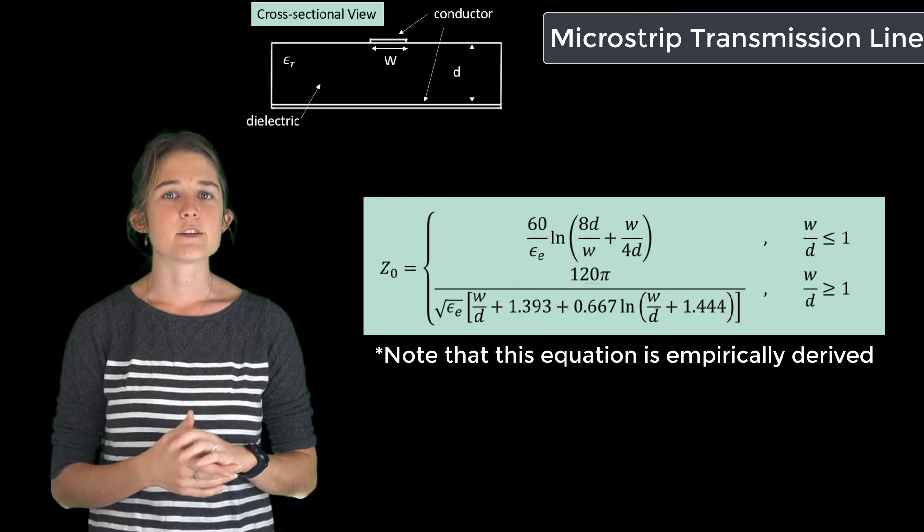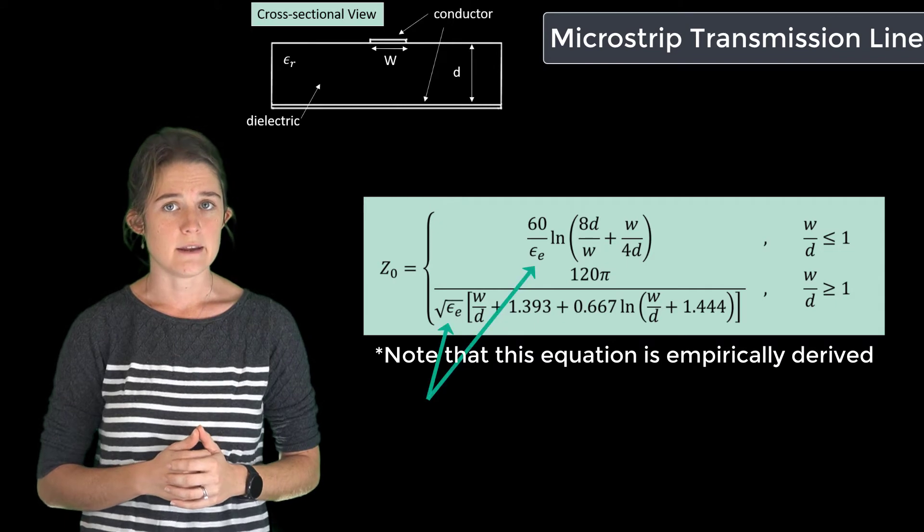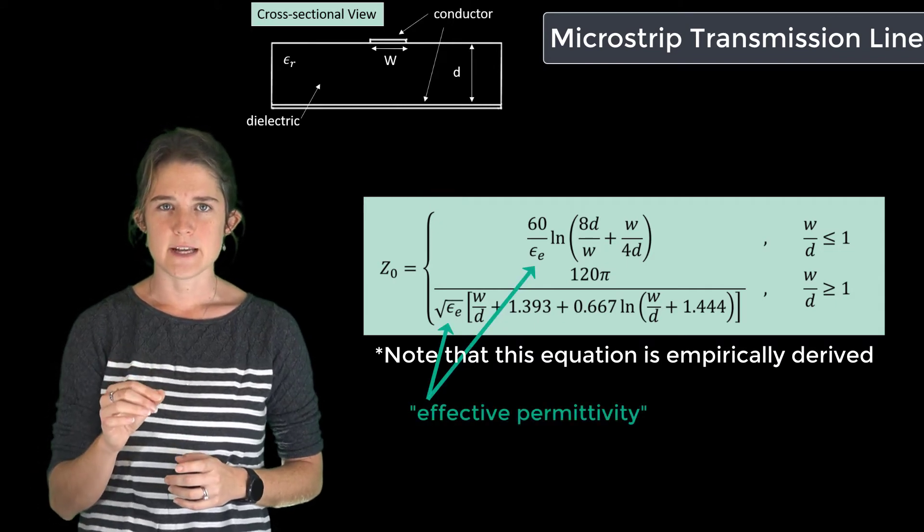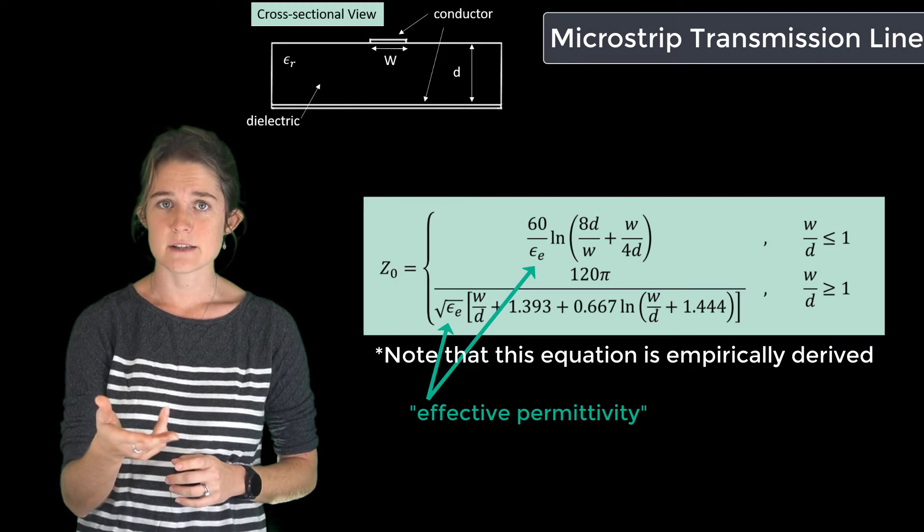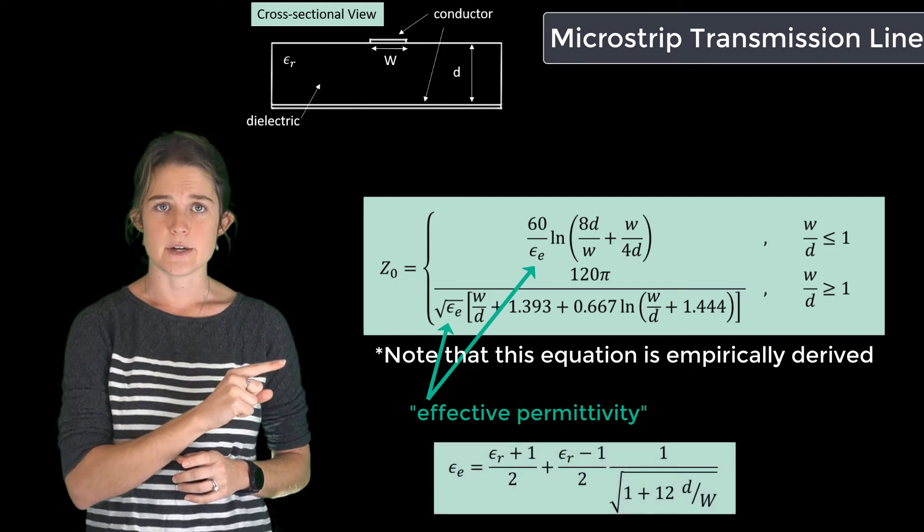Also note that this equation requires that you first calculate epsilon e, which is that effective permittivity I mentioned earlier, accounting for the fact that the medium is inhomogeneous, and epsilon e is calculated according to this equation.